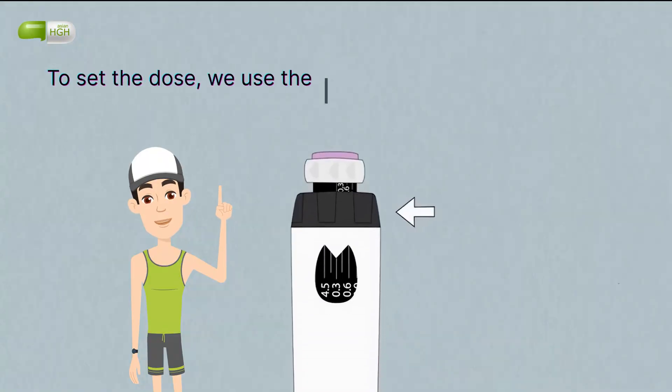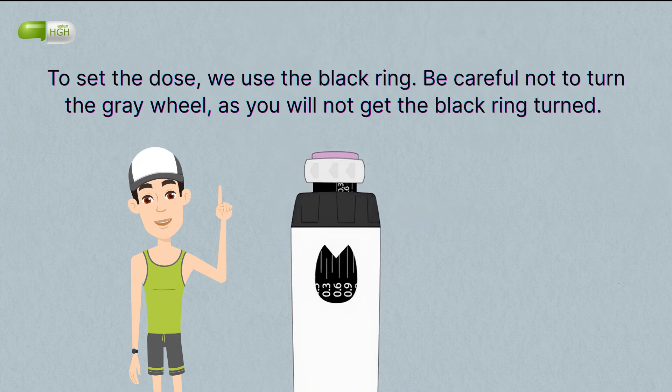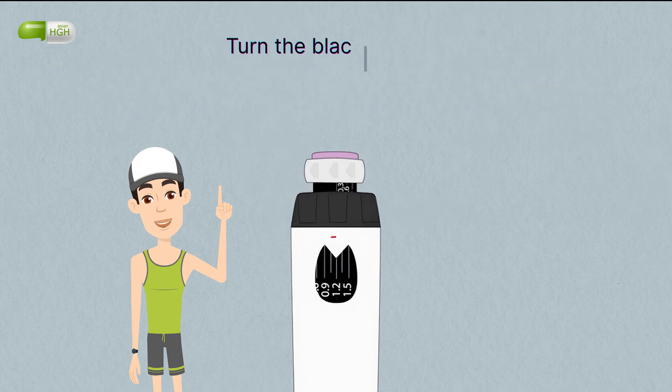To set the dose, we use the black ring. Be careful not to turn the gray wheel as you will not get the black ring to turn. Turn the black ring towards you so that the dose is aligned with the white marker.